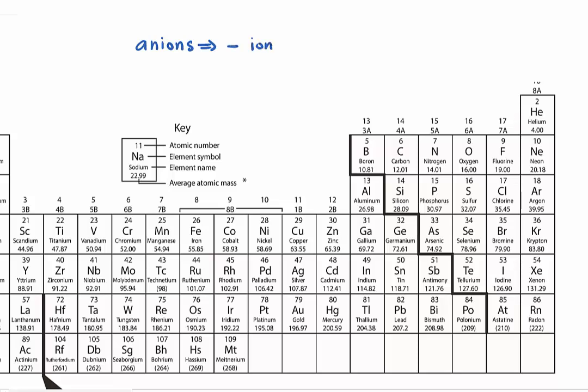Now, how do we name the negative charge ions? There are two things that we need to do. First, we drop the ending of the element on the periodic table. Second, after we drop the ending, we add ide to replace that ending.